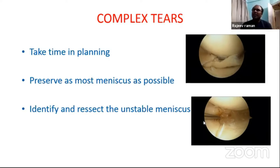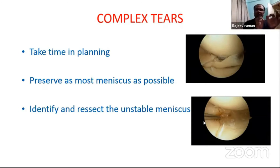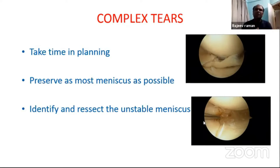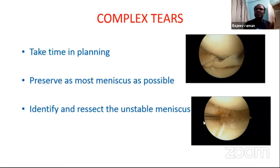The most important point: most complex tears are either in a young knee or an older knee. If you are getting this degenerative tear in a younger knee, always try to preserve the meniscus as much as possible. If it is a degenerative tear in an older, arthritic knee, you can debride the meniscus and leave the peripheral rim. That is your take-home message for the complex tear.